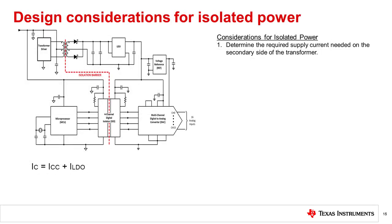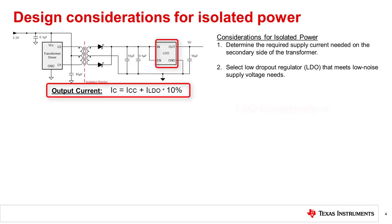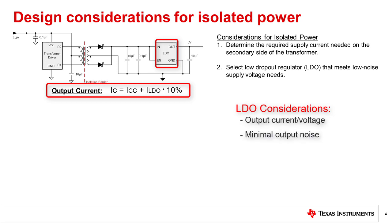Here are some design guidelines for discrete isolated power. Before you can determine the transformer for your design, you will need to determine the required supply current needed on the secondary side of the transformer. In many cases, this current will supply the secondary side of the power supply for an isolated component, which would be powered by the circuit, as well as the LDO. You will additionally want to plan for some residual current to keep the LDO from dropping out of regulation. A general rule of 10% added current should address the residual current that may be needed. You will want to choose a device capable of providing the desired output current, an accurate output voltage, and minimal output voltage noise.